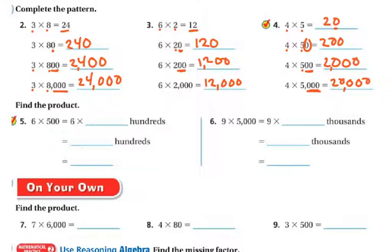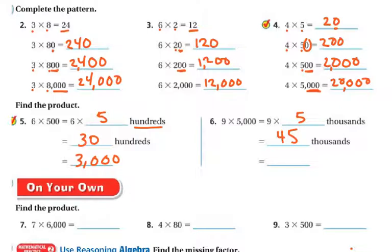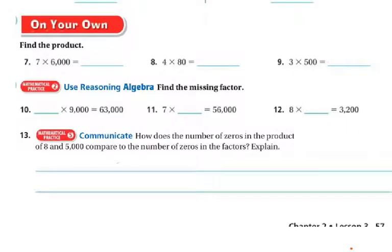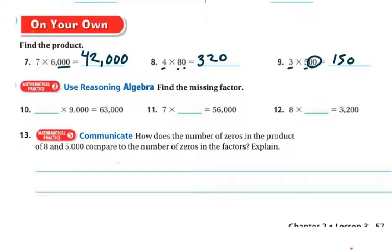All right, let's find these products. 6 times 500 is the same as 6 times 500s — you get 30 hundreds and 30 hundreds is 3,000. 9 times 5,000 — that's 9 times 5,000s, or 45,000s — because 9 times 5 is 45. For the on-your-owns: 7 times 6,000 — base fact 7 times 6 is 42 with three 0s — is 42,000. 4 times 80 — base fact 4 times 8 is 32 with one 0 — is 320. 3 times 1,500 — 3 times 5 is 15 with two 0s — is 1,500.